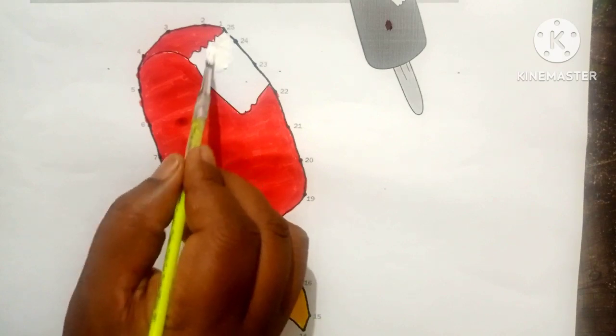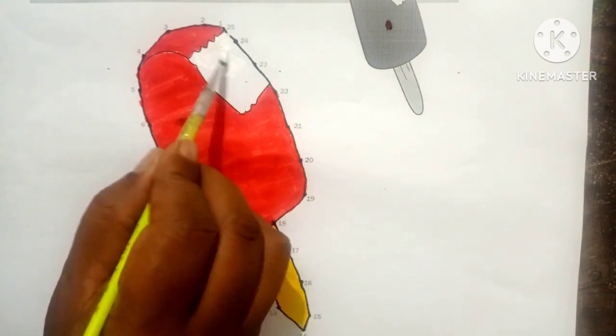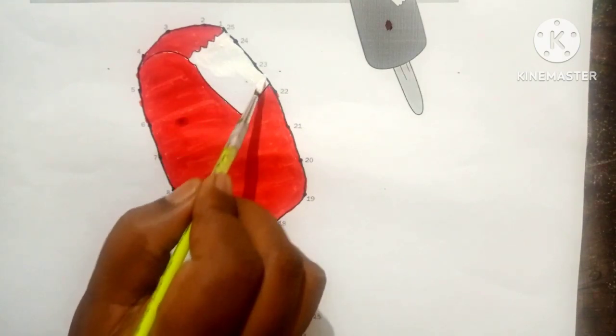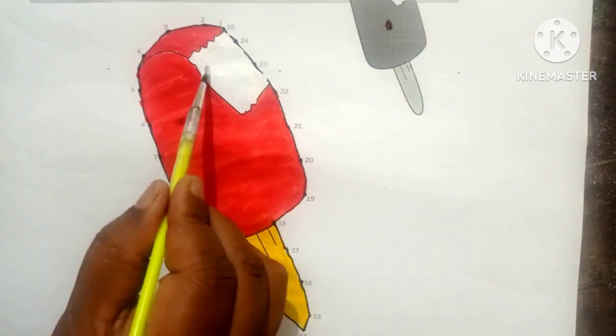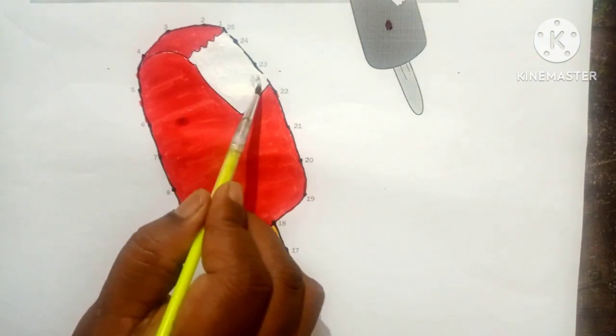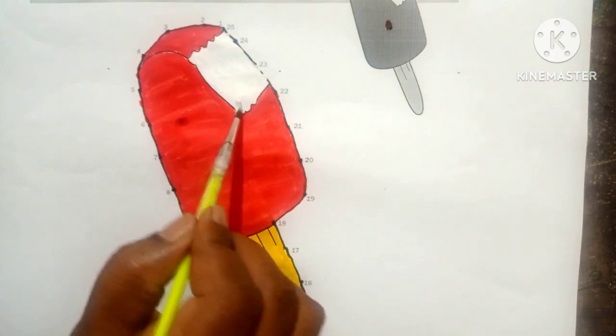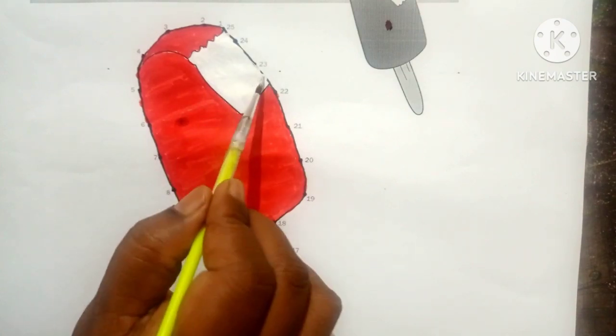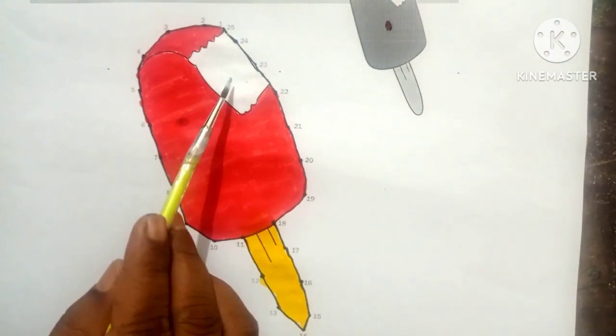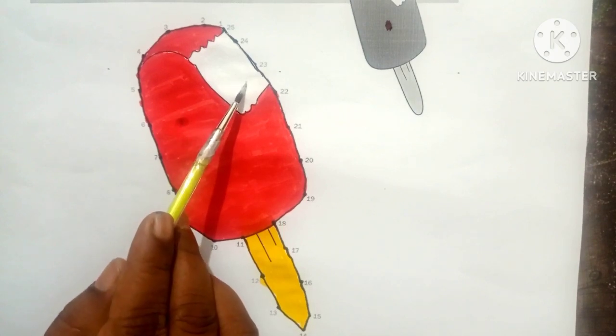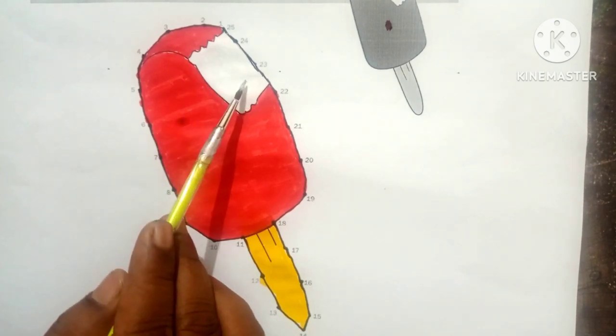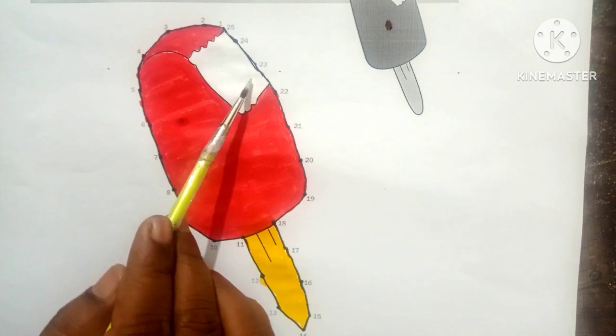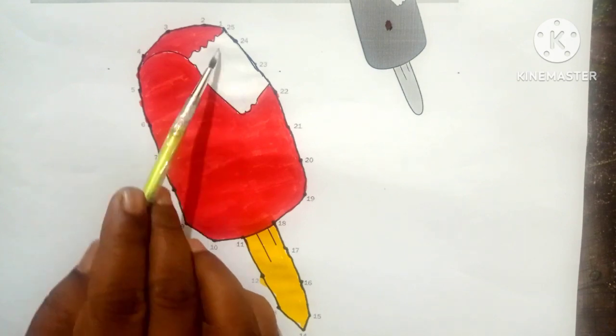This is the yellow color. We will give it white color. Now the ice cream is ready for eating.